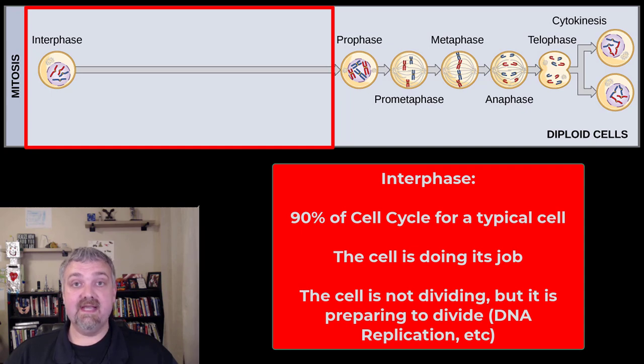So what's happening during interphase? The cell is doing its job. If it's a liver cell, it's making stuff, detoxifying, whatever. So interphase is when the cell is doing its job. It's not focusing on division, but it is preparing for division. So during interphase, you're going to see the replication of DNA and organelles. So during interphase, the cell has not started to divide, but it is preparing to divide. All right. So I already mentioned some cells never leave interphase, cells that don't divide. Other cells aren't in there very long, so that's interphase.